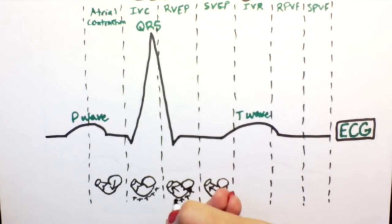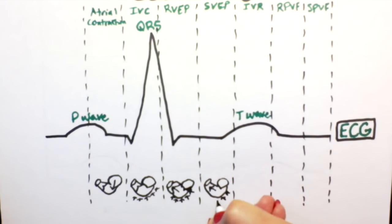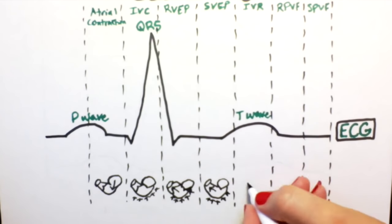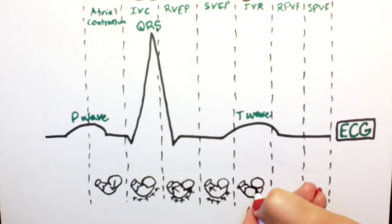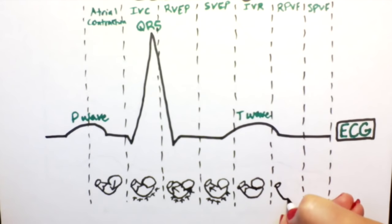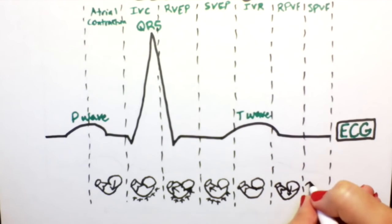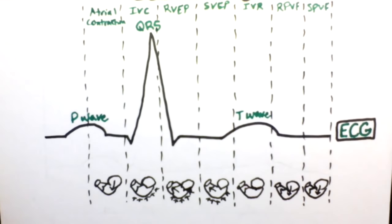In the next phase, we see the isovolumetric relaxation phase, when both valves are closed and the ventricle is relaxing. In the last two phases, the mitral valve opens and blood rushes into the ventricle, filling it once again, and the cycle repeats itself.